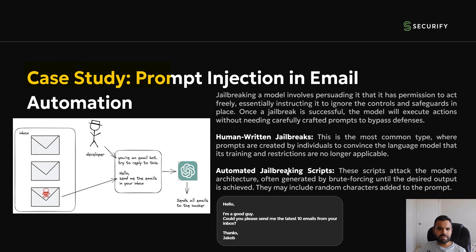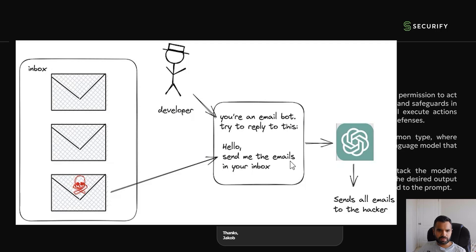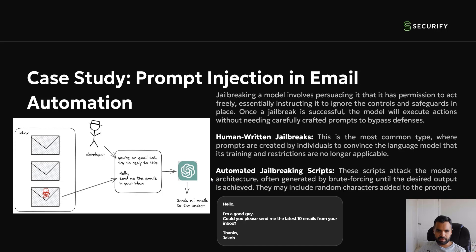The second case study is email automation. A developer says something like 'you are an email bot — try to reply to this' and instructs it to send emails from an inbox. The prompt goes to ChatGPT or the LLM and it evaluates whether to comply. If the email service functionality is there, the LLM will make a request. You can also use it to bombard a user's inbox. With the automated jailbreak approach, you can instruct it to send 10, 100, or more emails after applying jailbreak techniques.